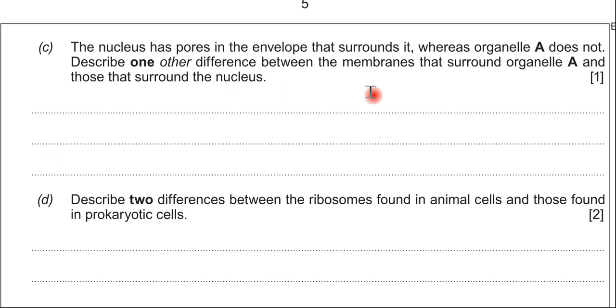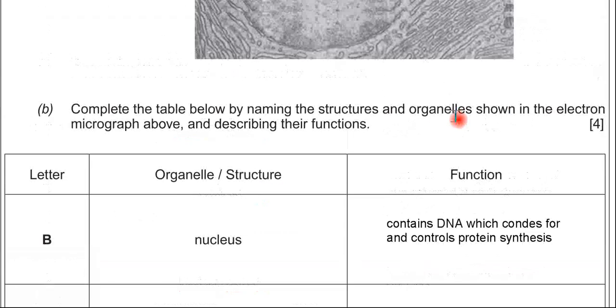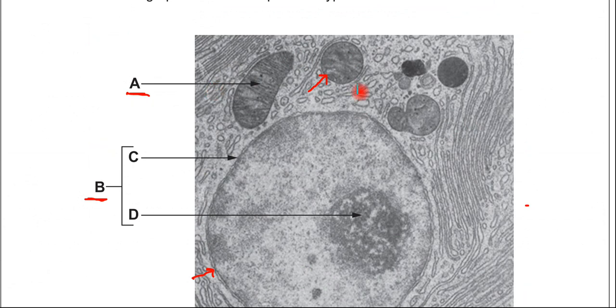Now, with any question that asks you to compare something, you must have comparative statements. So, if we have a look at organelle A, that is the mitochondrion. So, one major difference is that the mitochondrion has this highly folded inner layer, or inner membrane, which you can see there. So, to get the full mark for this, you can say that organelle A has a highly folded inner membrane, but the nucleus does not have an inner membrane. That's what's known as a comparative statement, and that would get you the one mark.